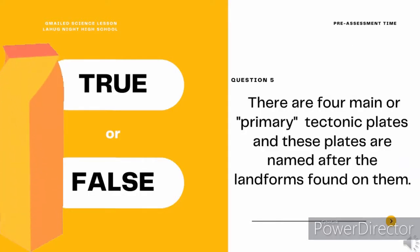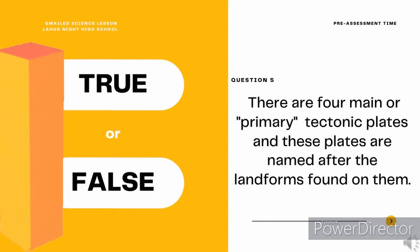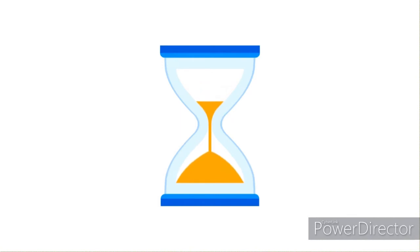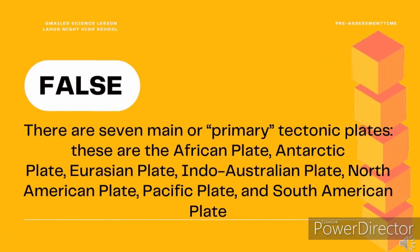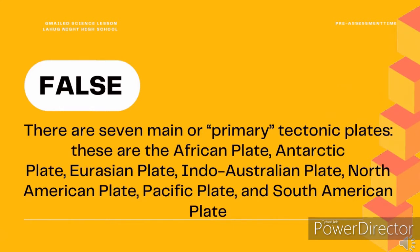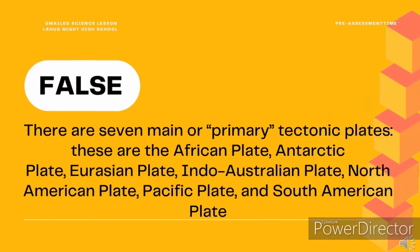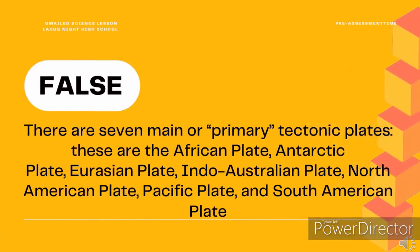True or false? Question 5. There are 4 main or primary tectonic plates, and these plates are named after the landforms found on them. True or false? It's false! There are 7 main or primary tectonic plates: the African plate, Antarctic plate, Eurasian plate, Indo-Australian plate, North American plate, Pacific plate, and South American plate.